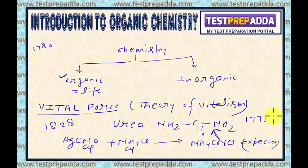And in 1773, urea had already been isolated from human urine. This way, the theory of vitalism was rejected. Later on, scientists showed that on burning all compounds obtained from plants and animals in oxygen, they produce CO2 and H2O. As a result, organic chemistry got a new definition.